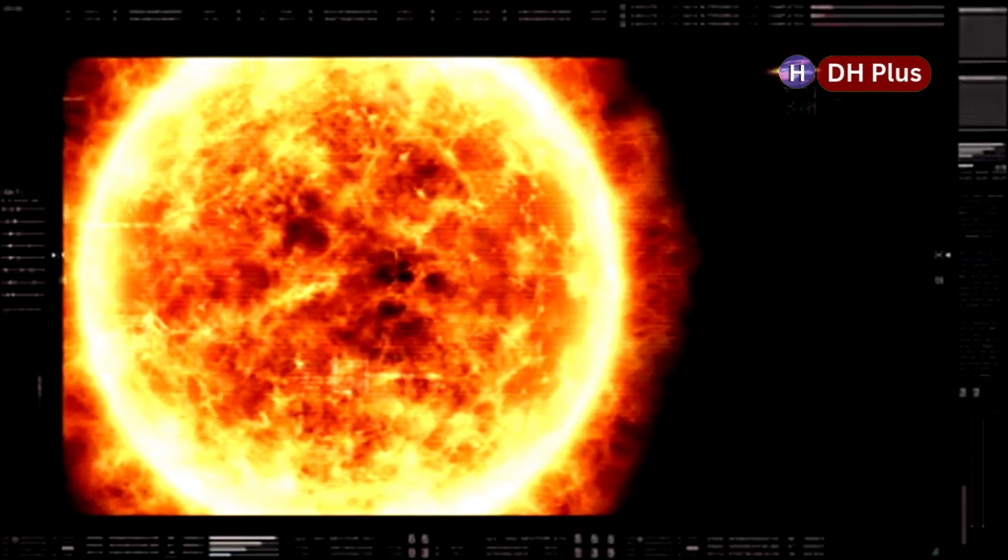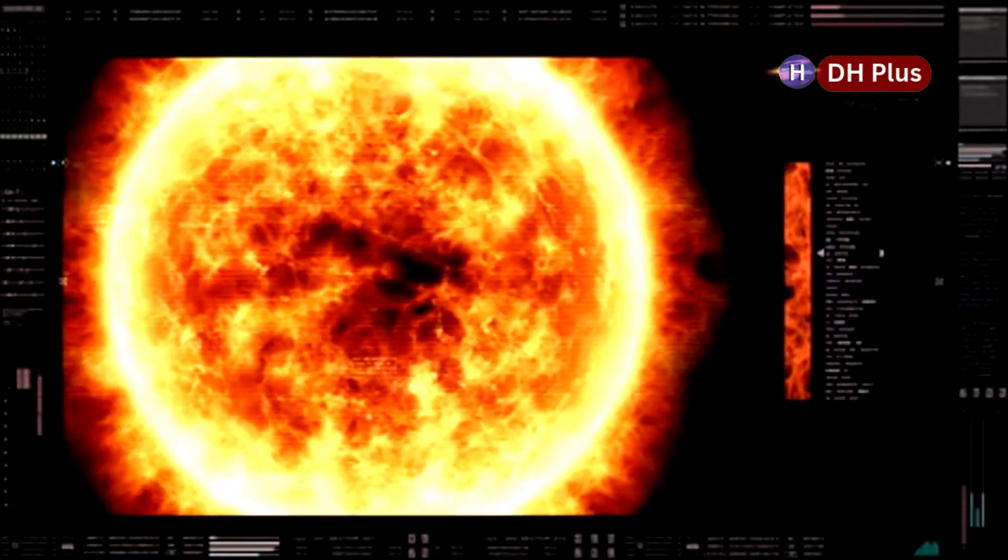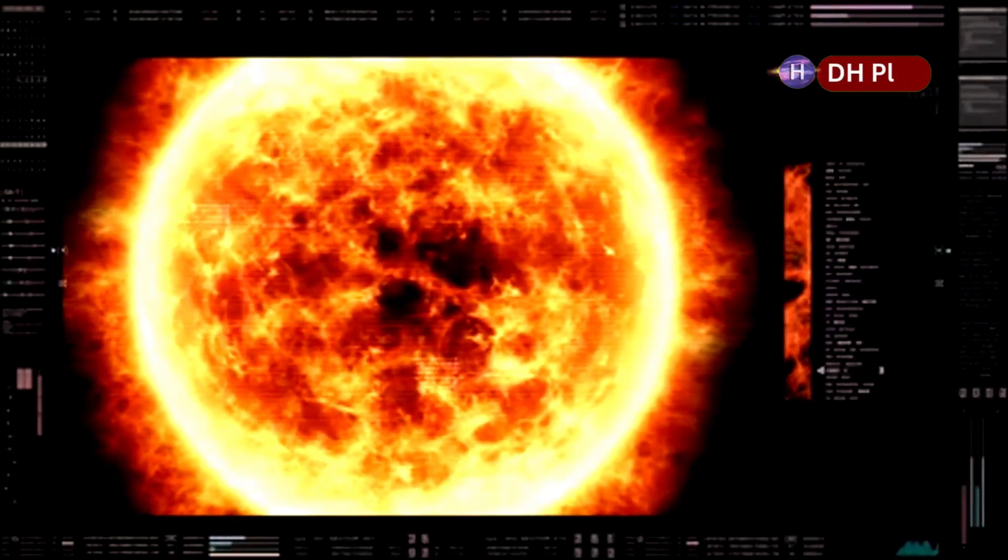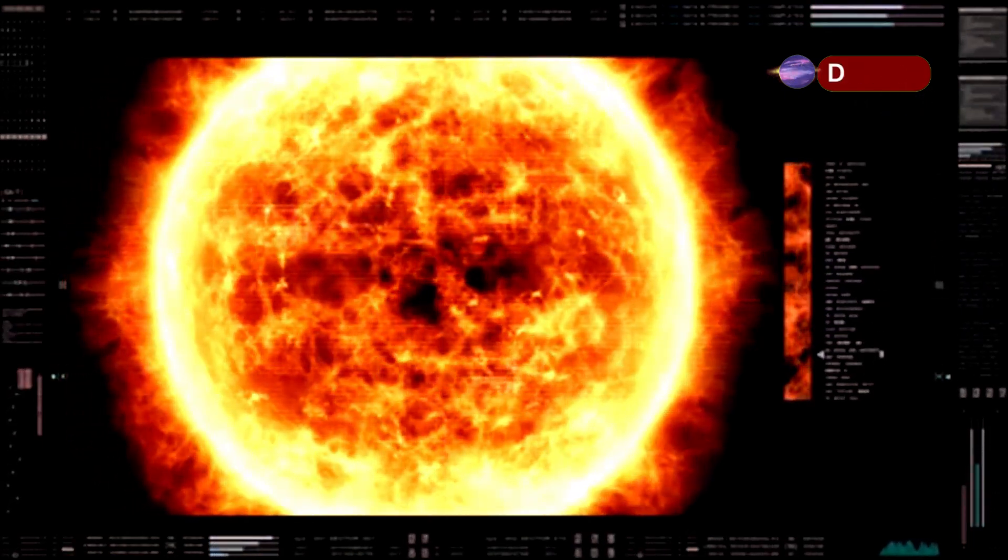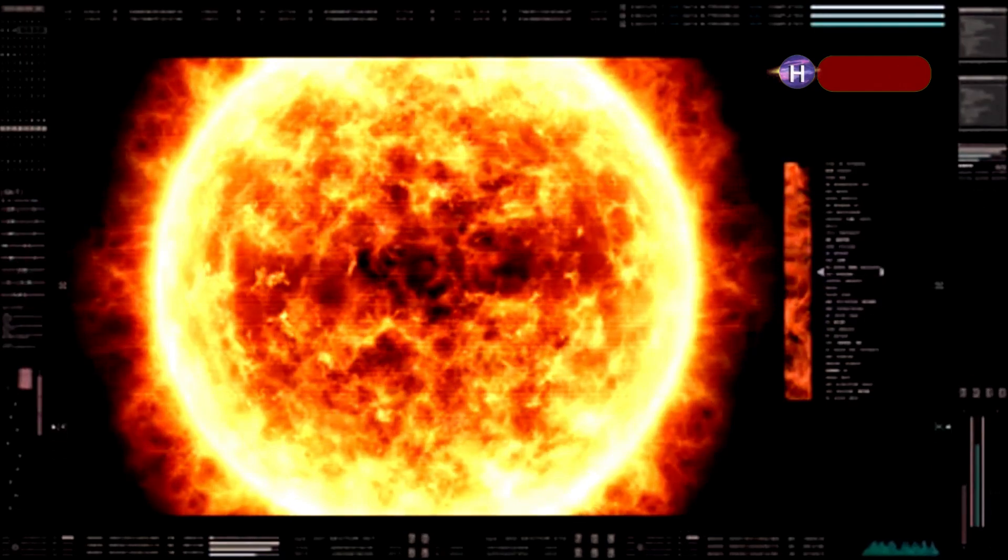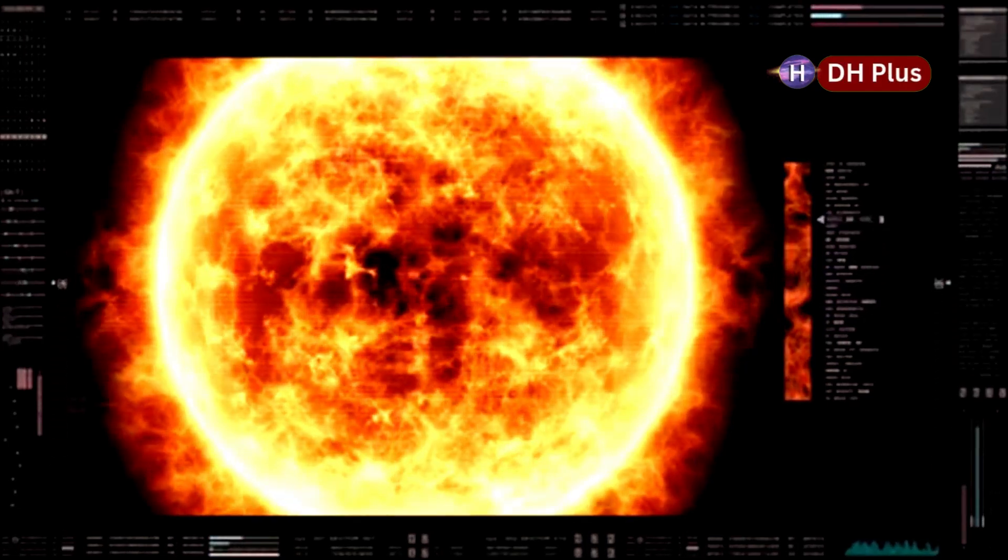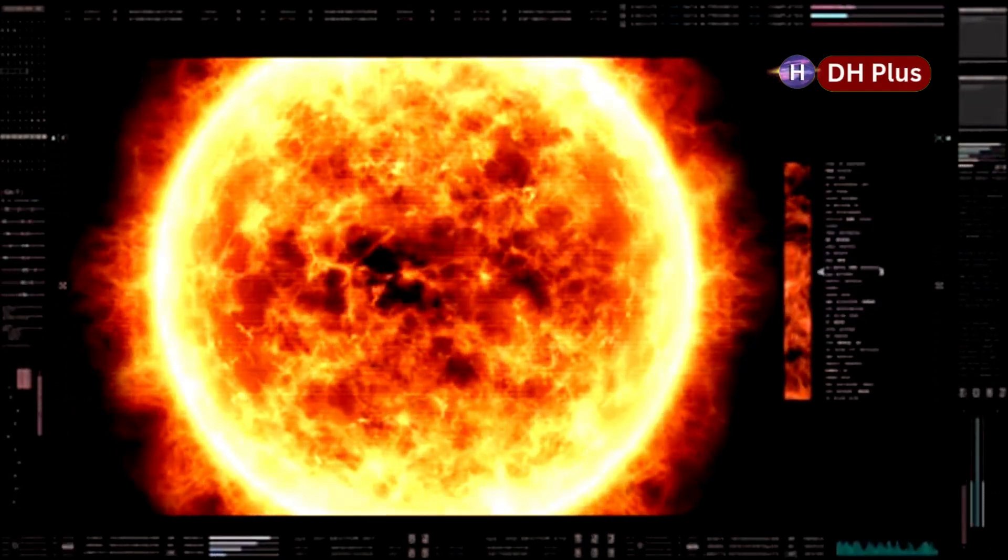As stars get older, they tend to lose their mass. This is something that is happening to the sun as it grows in age until eventually, in an estimated 5 billion years from now, after it has exhausted all of its nuclear fuel, it will evolve into a bloated red giant, engulfing the orbits of Mercury, Venus, and possibly even Earth.